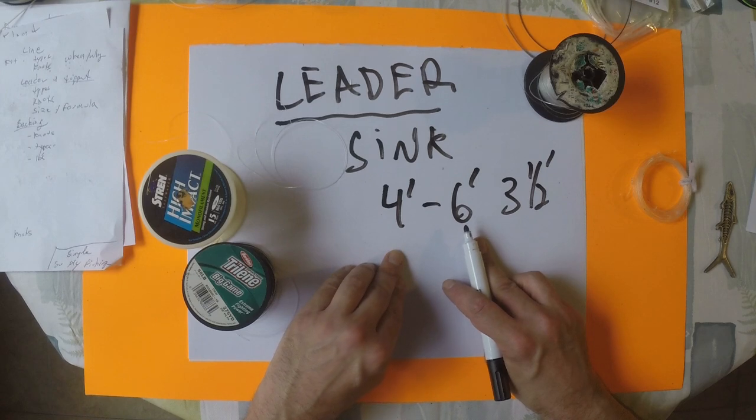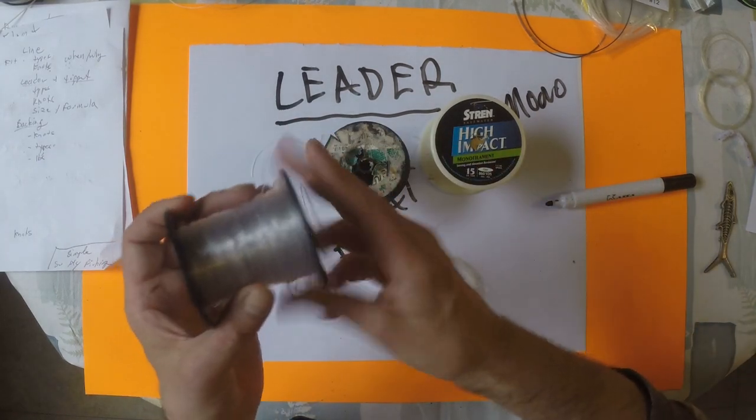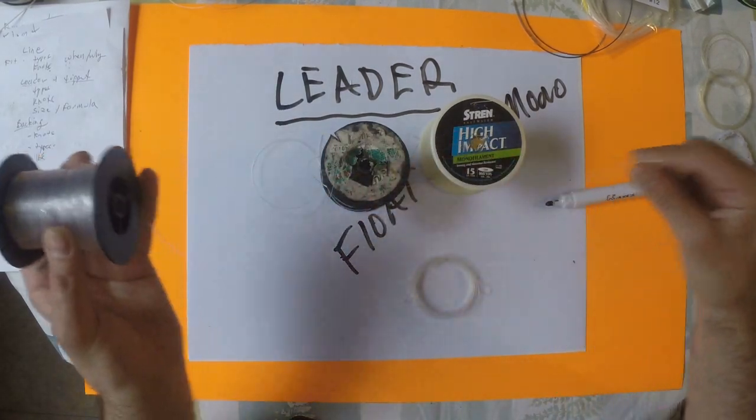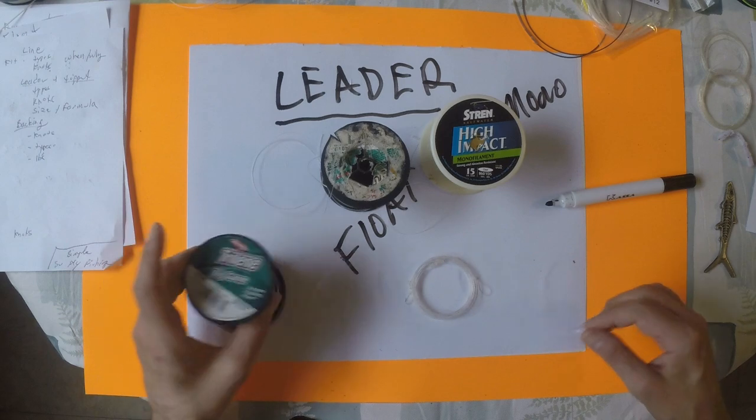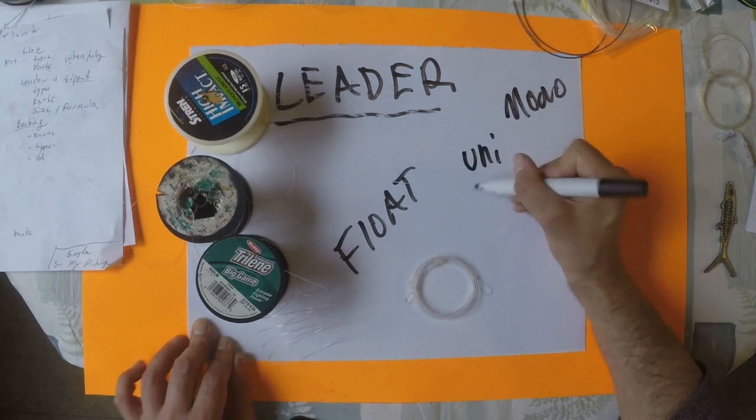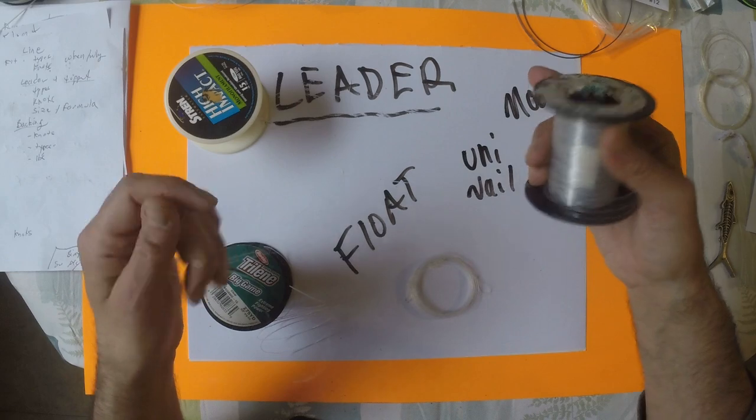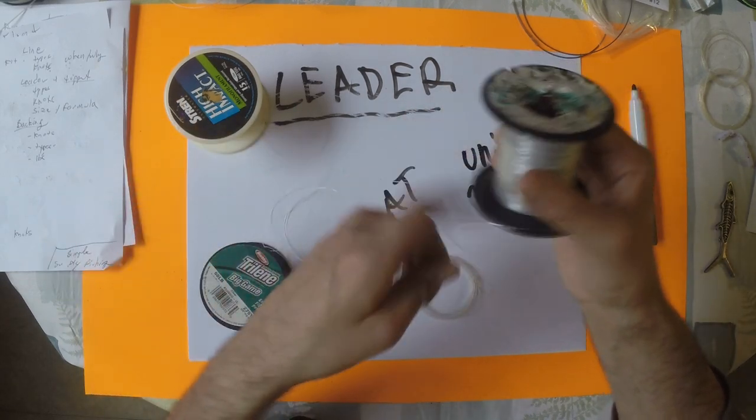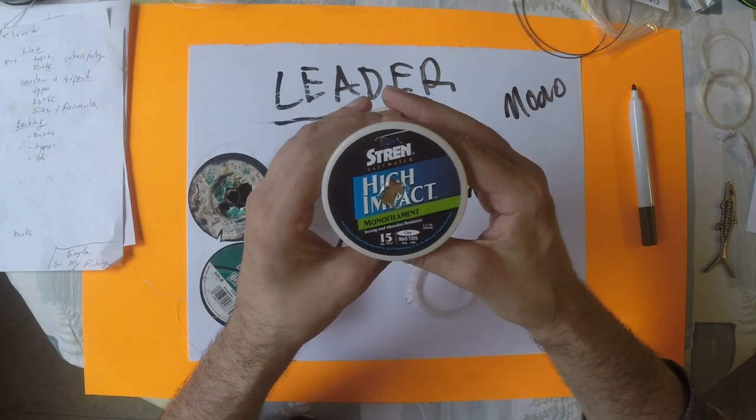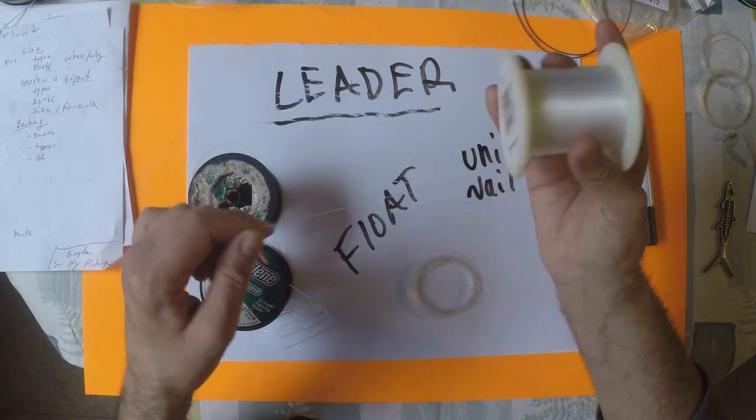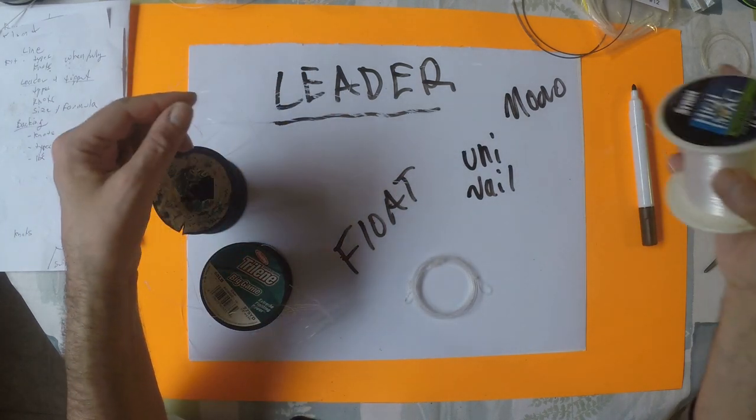For my floating line, I like a longer leader, and you can make them short as well, but I generally would use about six feet of 50 pound monofilament. And you can use a uni to uni, or a nail knot, any connection knot that you want, and I will attach that to about 30 pound monofilament, between four and five feet. And then to that, I will attach a 15, or so, pound, you can call it tippet, with a loop on the end, and we'll show you that in a second.